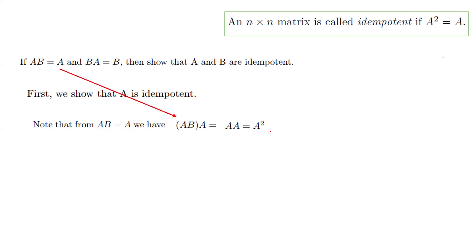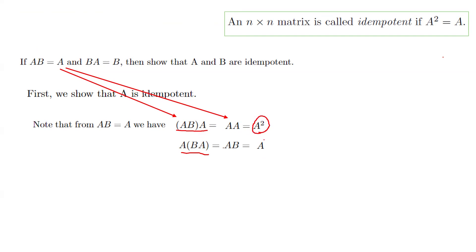We can group the left-hand side as A times (BA). But BA equals B, so it becomes A times B. By the given condition, A times B equals A. So both groupings of A times B times A give the same left-hand side, and both right-hand sides agree, meaning A squared equals A. We conclude that A is idempotent.